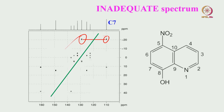So C7 - go horizontally - you are going to hit a peak, and that is carbon 6. You can come down and also hit another one. Now come vertically down, hit a cross peak - the same chemical shift corresponds to the same carbon - then go horizontally again. You hit a peak that corresponds to carbon 5. At the same chemical shift, go up and then horizontally, you hit a peak that is C10.